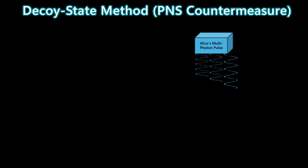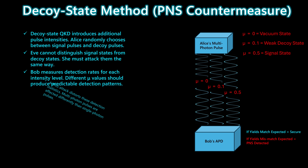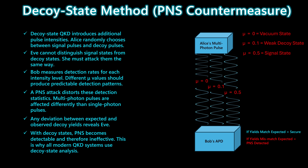In the decoy state method, Alice randomly varies the intensity of the pulses she sends, choosing between a vacuum state, a weak decoy state, and a stronger signal state. Crucially, Eve cannot tell which pulses are signal and which are decoys, so she must treat all of them in exactly the same way. Bob then measures the detection rates associated with each intensity level. Under normal operation, these yields follow predictable patterns based on the Poisson statistics of the source. A photon number splitting attack distorts these statistics, because multi-photon pulses behave differently from single-photon pulses. Any deviation between the expected and observed decoy yields immediately reveals Eve's presence. With decoy states, photon number splitting becomes detectable and, therefore, ineffective. This is why all modern QKD systems rely on decoy state analysis to maintain security.